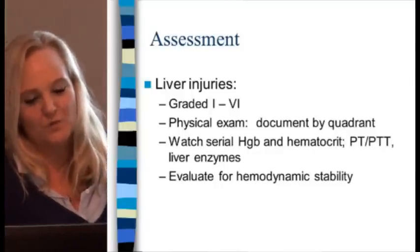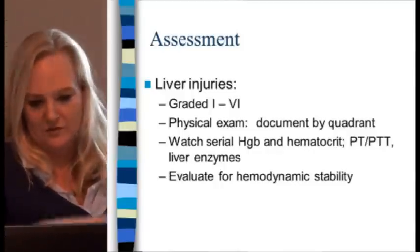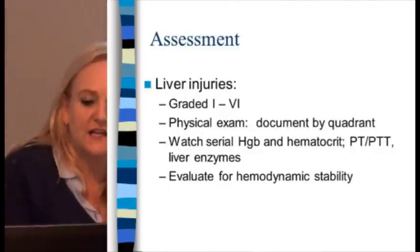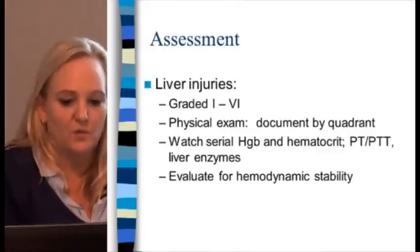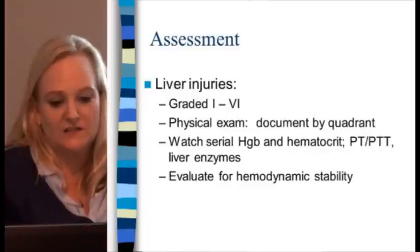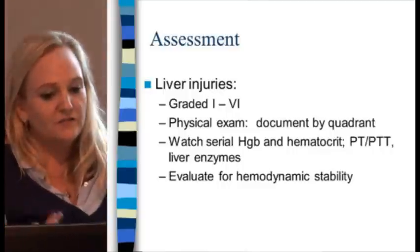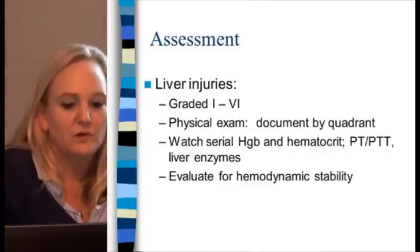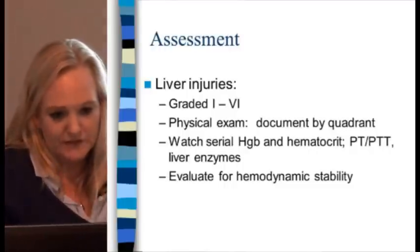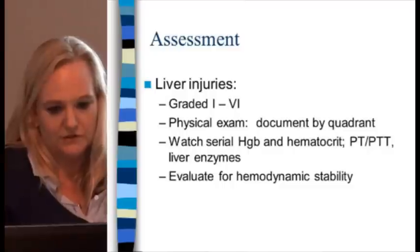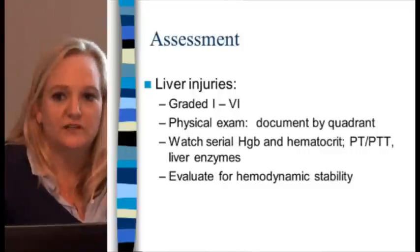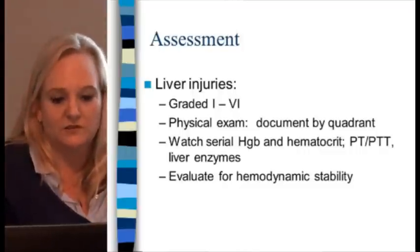Liver injuries are graded 1 through 6. On physical exam, document by quadrant. Watch serial hemoglobin and hematocrit, PT, PTT, and liver enzymes. If they haven't been ordered, remind the team — there's no reason not to order them with a liver injury. It's very important to watch serial crits and INRs, because liver injuries can progress to a nightmare if they're not watched.